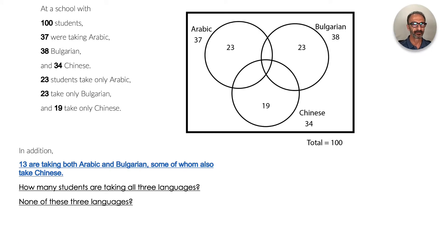We have 37 Arabic, 38 Bulgarian, and 34 Chinese as the problem states. 23 students take only Arabic, so I wrote this here. This includes this portion only, this section right here on the left.